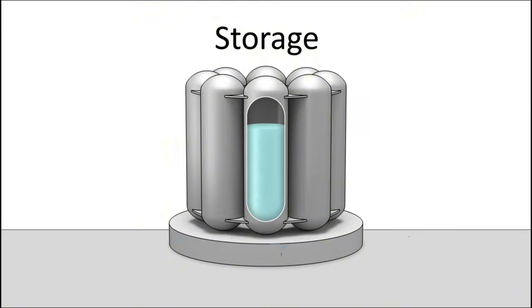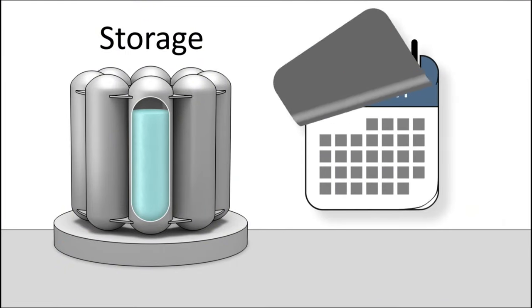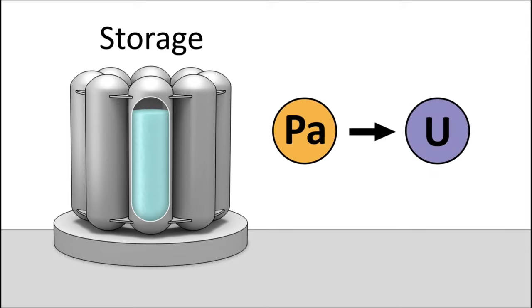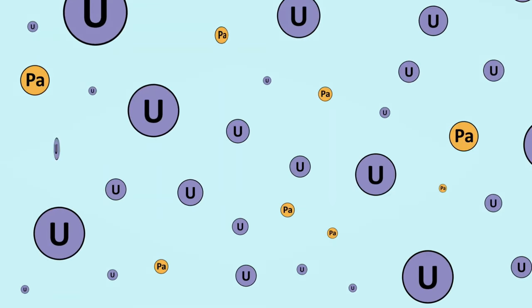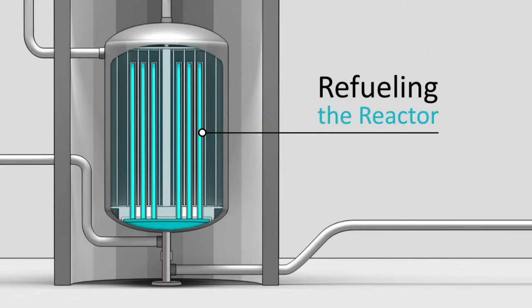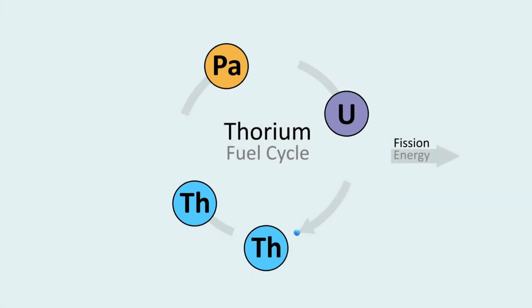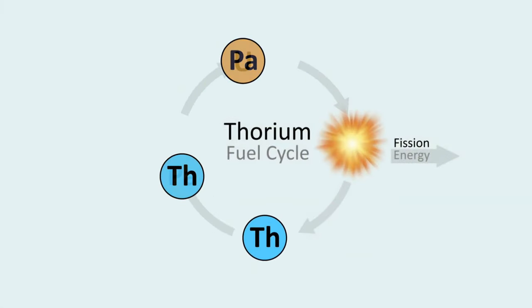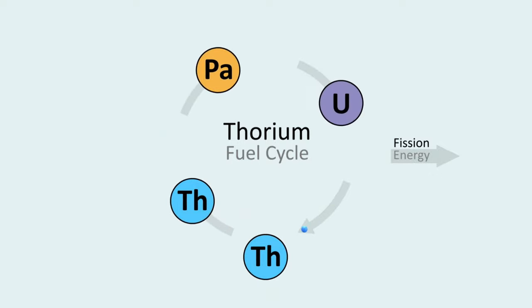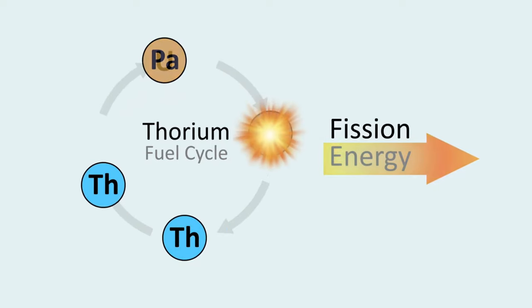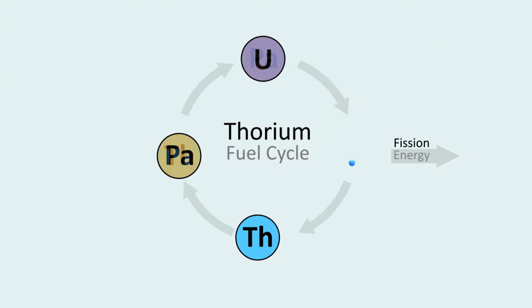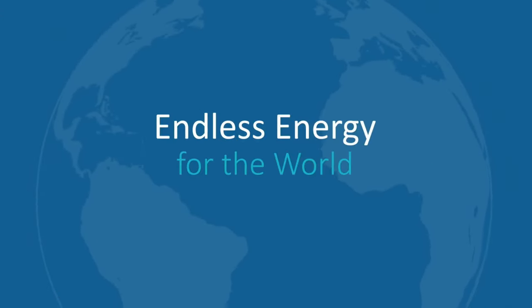The thorium fuel cycle has many advantages over the uranium fuel cycle. It is more efficient, as it uses almost all of the thorium, compared to only 0.7% of the uranium. It is safer, as it does not require enrichment, which reduces the risk of proliferation and terrorism. It is cleaner, as it produces less waste, which is less radioactive and easier to manage. And it is cheaper, as it uses a cheaper and more abundant fuel and requires less infrastructure and maintenance.